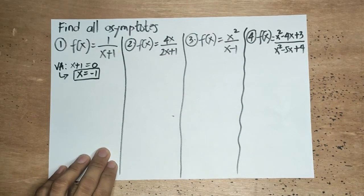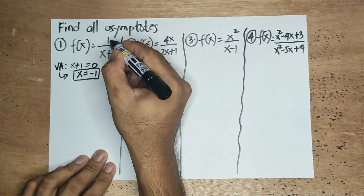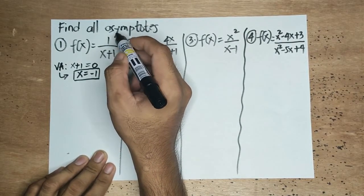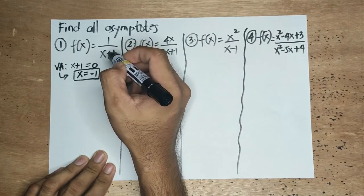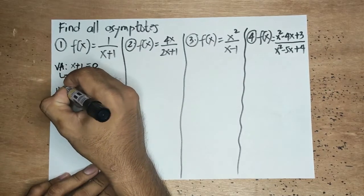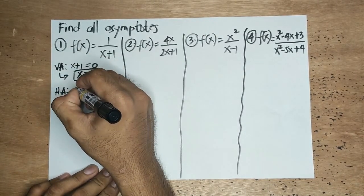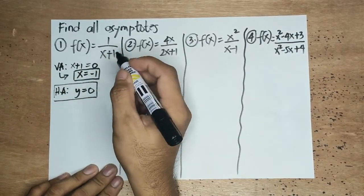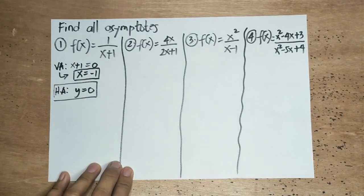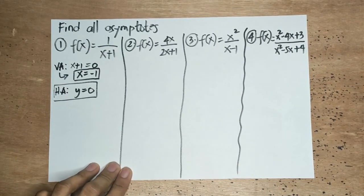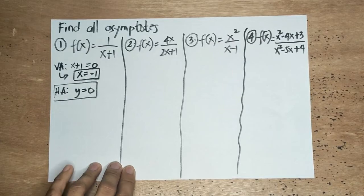For the horizontal asymptote, since the degree of the numerator is 0 and the degree of the denominator is 1, since the degree of the numerator is less than the degree of the denominator, our horizontal asymptote is automatically y is equal to 0. Since meron siyang horizontal asymptote, wala nang oblique asymptote. Kasi kung mayroong horizontal asymptote, wala nang oblique asymptote. Kapag may oblique asymptote, wala nang horizontal asymptote. Bear that in mind.